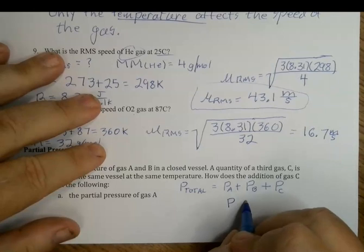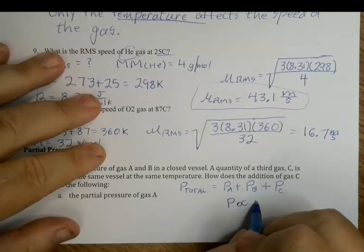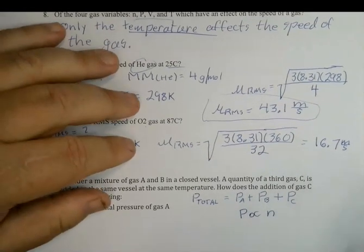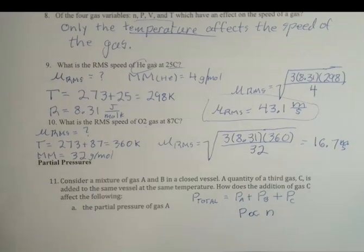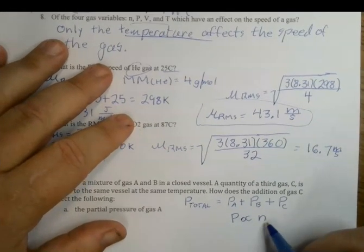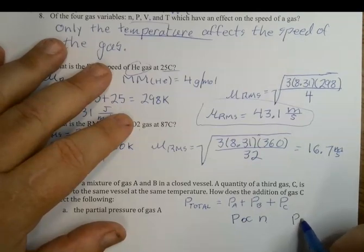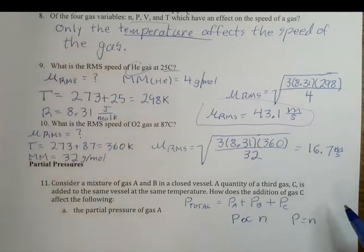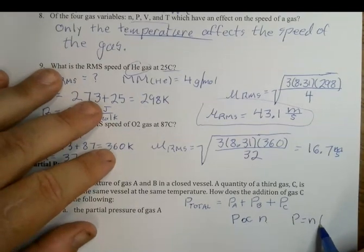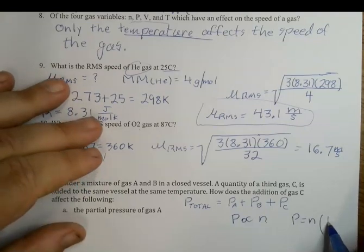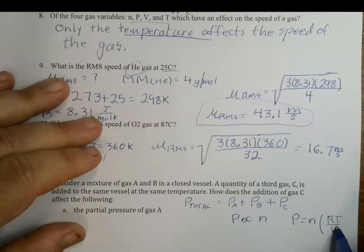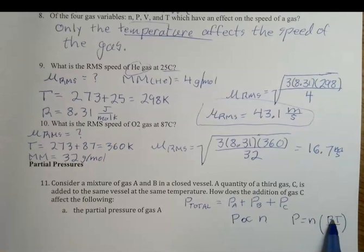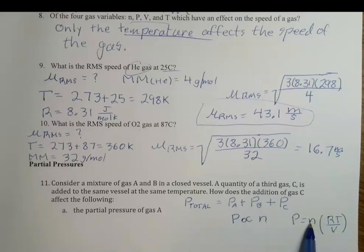The second thing to understand is that the pressure of a gas is proportional to the number of moles. Using the ideal gas law solved for pressure: P = NRT/V. Assuming temperature and volume are constant, if you double the number of moles you double the pressure, and if you cut the moles in half you cut the pressure in half. It's a direct, simple relationship between number of moles of gas in the container and the pressure.